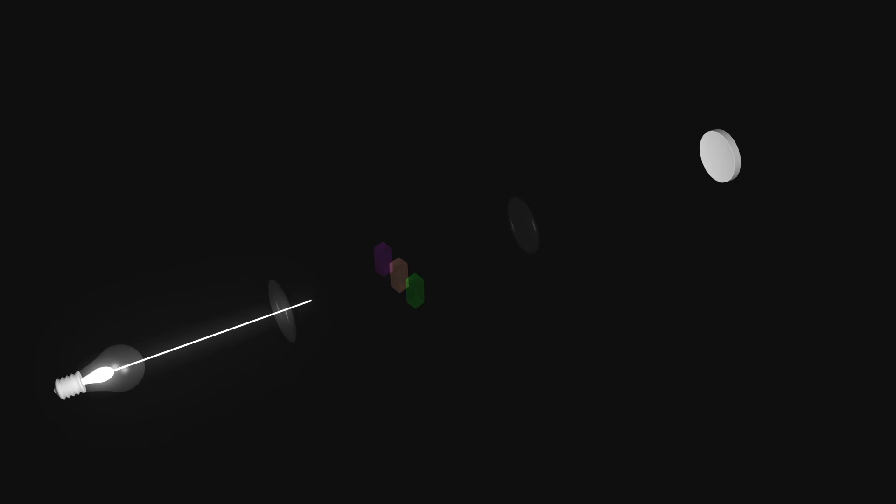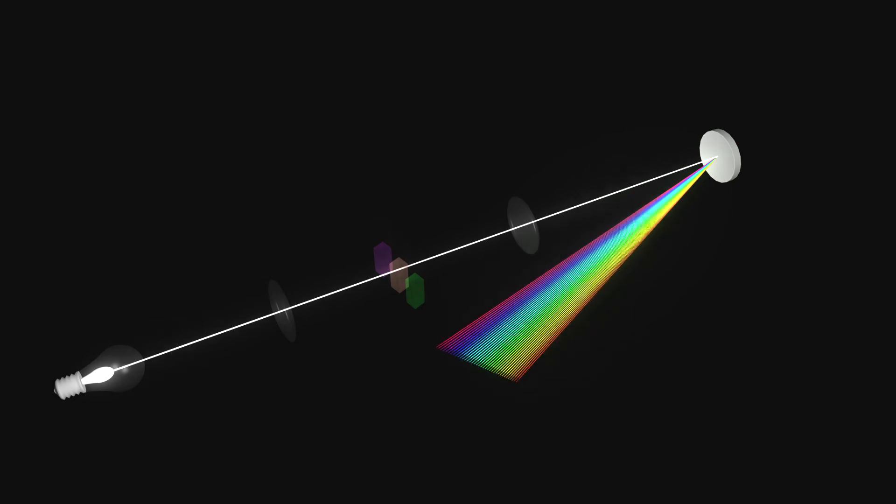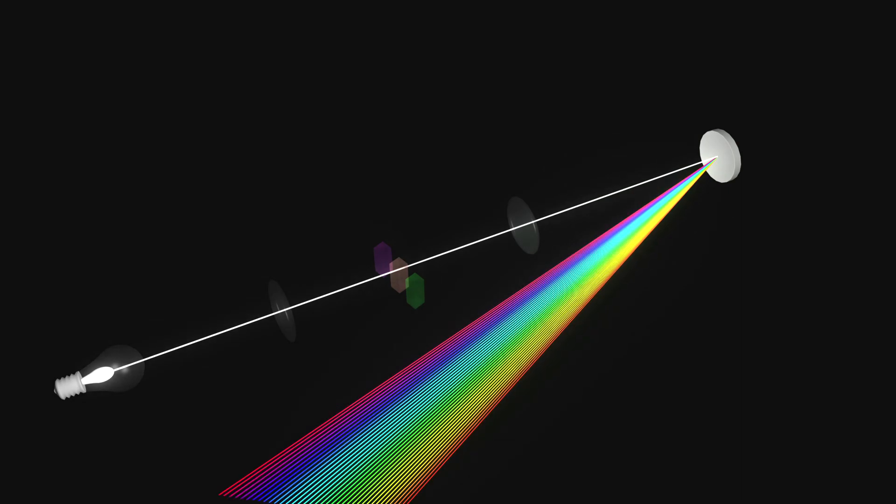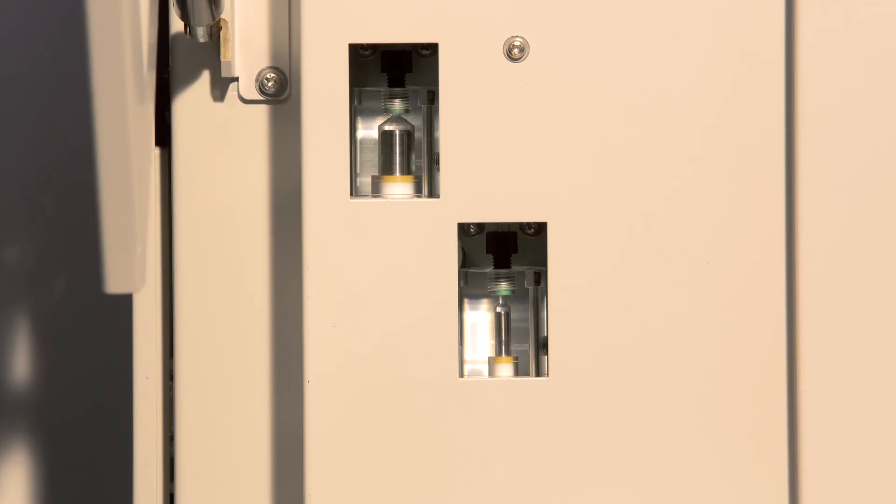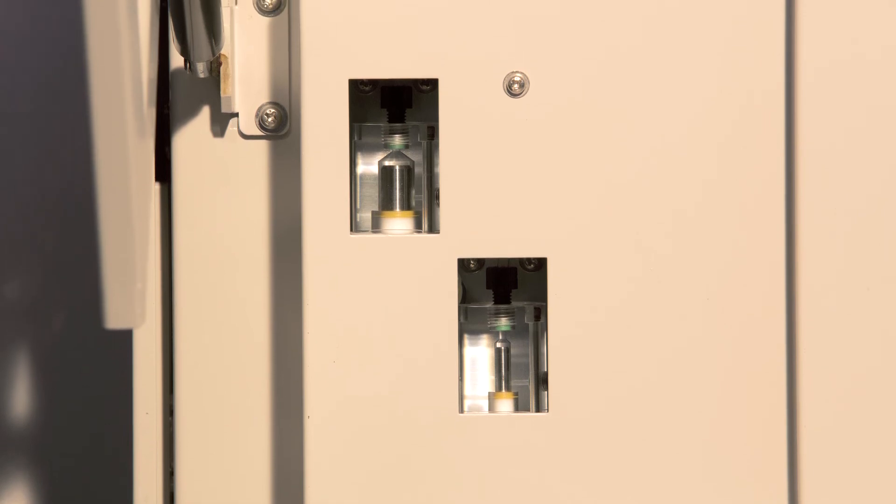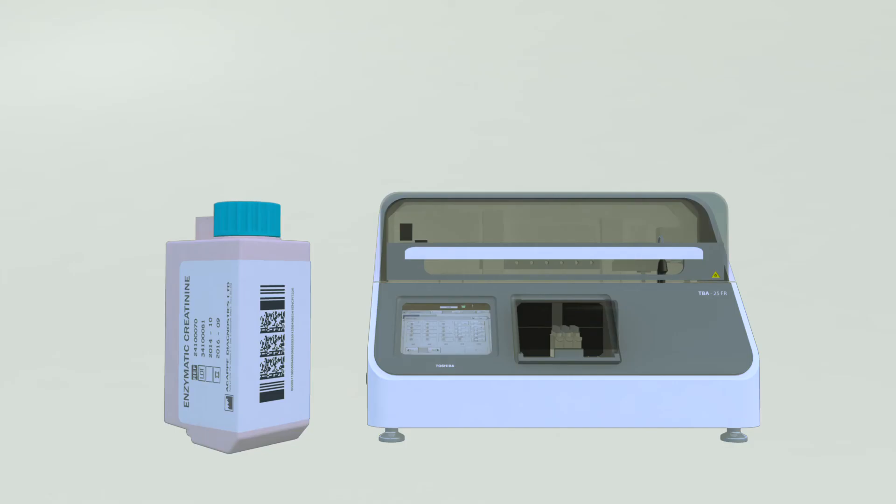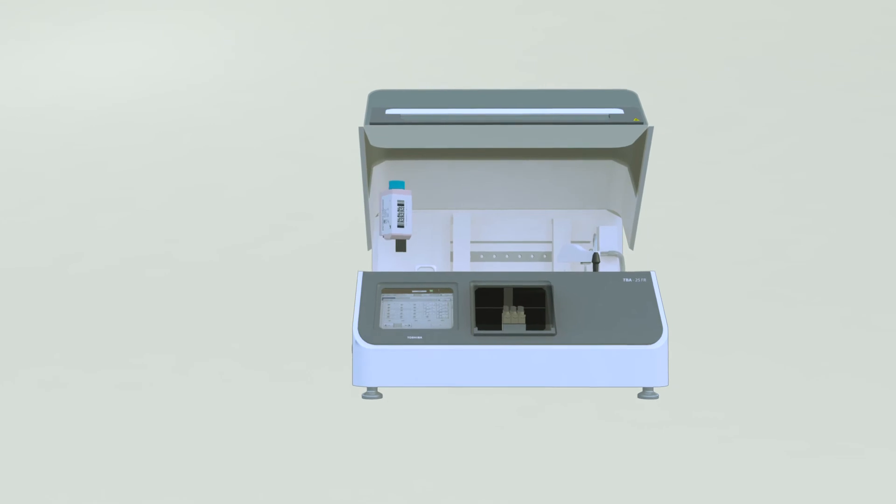TBA25FR comes with grating photometry with 16 wavelengths, which is the highest in the industry in this segment. High photometric linearity and accuracy is guaranteed. TBA25FR uses a diluter with steel piston, the proven technology of the TBA series, known for its robustness, accuracy, and precise pipetting.